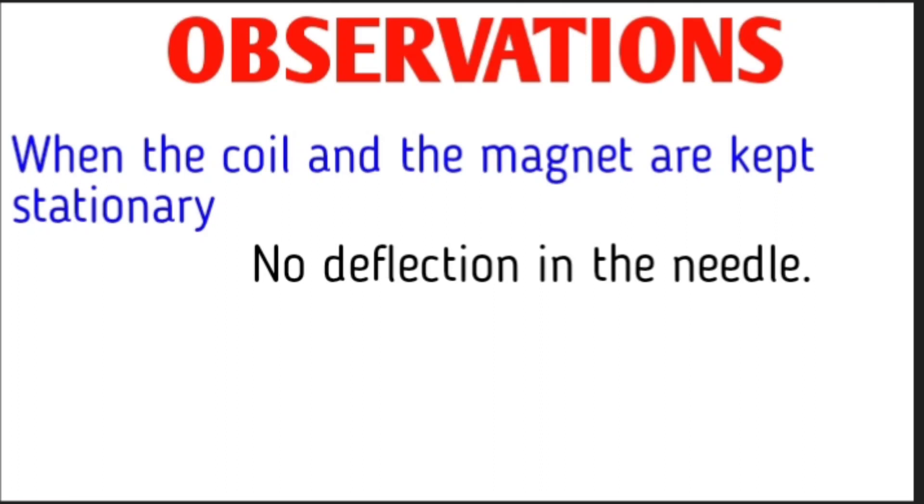This is what he did with a magnet stationary - he moved the coil, and found the same result. With the north pole, when the coil moves towards it, there's right side deflection. When moving away, left side deflection. Same with south pole reversed. So whether the magnet moves or the coil moves, the result is the same.